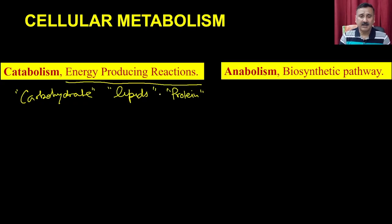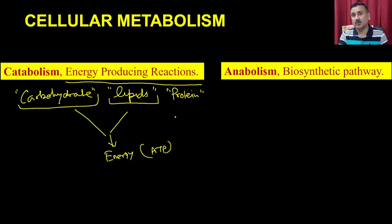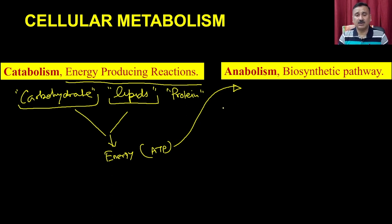Under starvation, protein is converted into carbohydrate and lipids, and then catabolic reactions run to produce energy. But that is very rare. Once you do catabolic reactions for carbohydrate or lipid, you produce energy in the form of ATP. And that energy is utilized for anabolic reactions — to drive reactions so that you have the synthesis of new biomolecules.